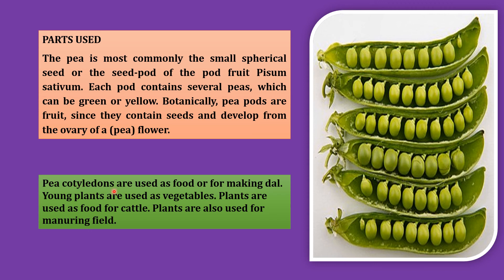Pea cotyledons are used as food or for making dal — hope you have eaten them also. Young plants are used as vegetables. Plants are also used as food for cattle. Plants are also used for manuring the field.